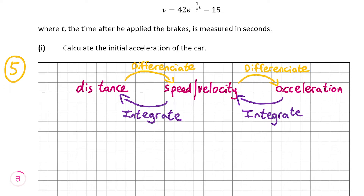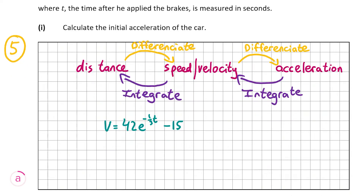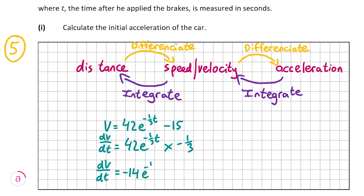We're given the formula for the velocity, and we're trying to find the acceleration, so we're going to differentiate the formula for velocity. The velocity is equal to 42e^(−t/3) − 15, and differentiating with respect to t: dv/dt = 42e^(−t/3) times the derivative of the exponent. The derivative of −t/3 is just −1/3, and the −15 goes to 0. So 42e^(−t/3) × (−1/3) = −14, giving dv/dt = −14e^(−t/3).